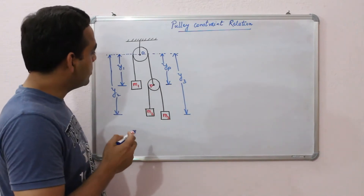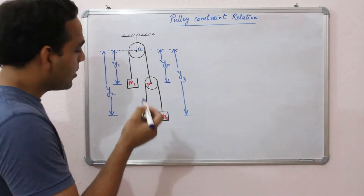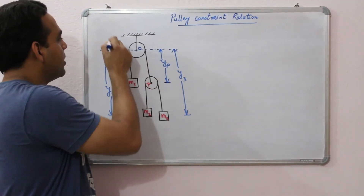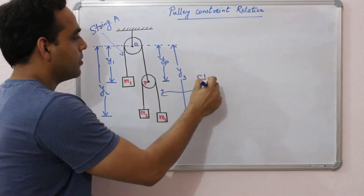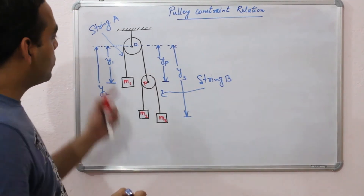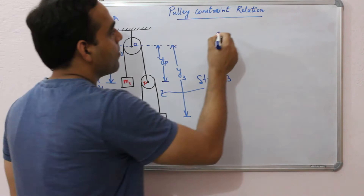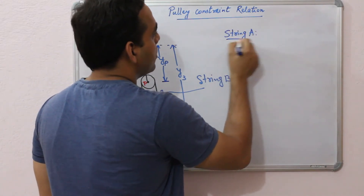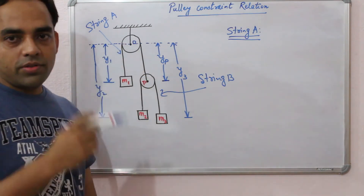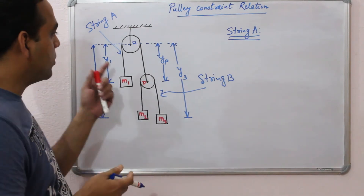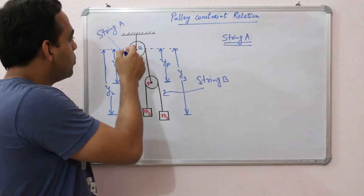Now I am going to write down the constraint relation that shows the dependence of acceleration of block M1 with the acceleration of block M2 and M3. We have two strings — let this be string A and this be string B. Since we have two strings, there will be two constraint relations for this problem. I will take two assumptions: the string is inextensible, meaning the length of the rope does not increase or decrease. Similarly, string B is also inextensible, and the pulleys are massless and frictionless.